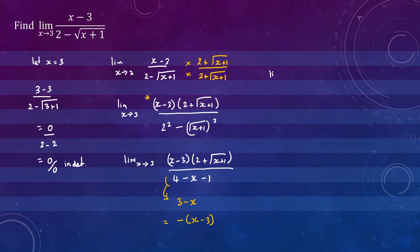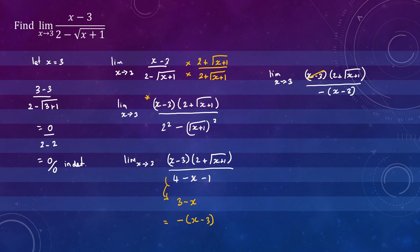So we have the limit as x approaches 3 of x minus 3 times 2 plus the square root of x plus 1, divided by negative x minus 3. We can cancel the x minus 3, leaving the limit as x approaches 3 of 2 plus the square root of x plus 1, with a negative in front.